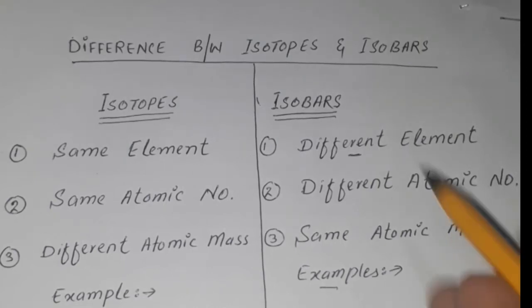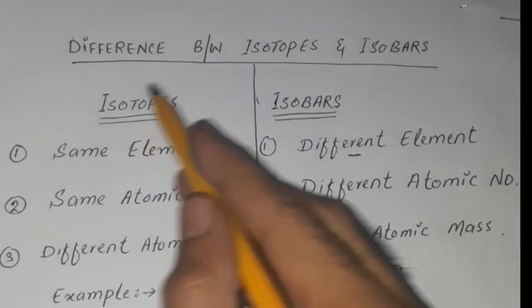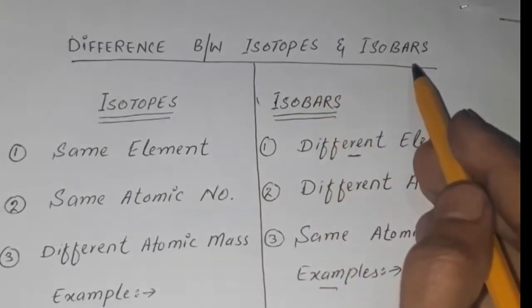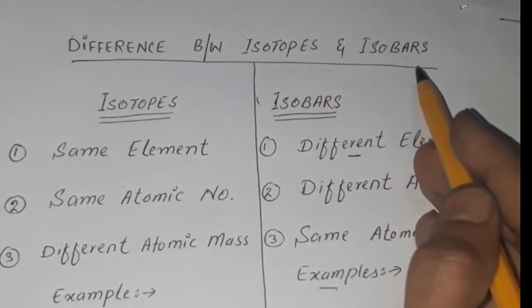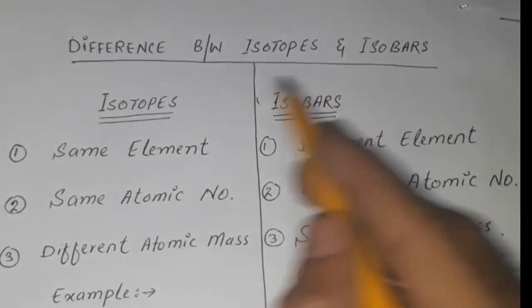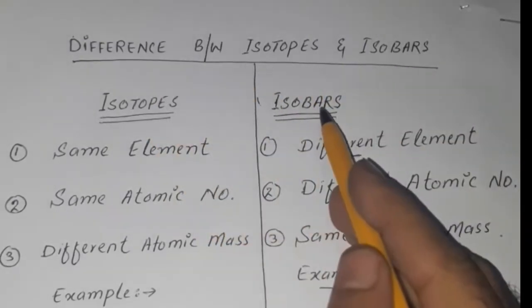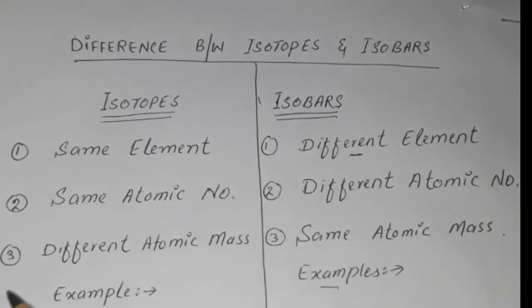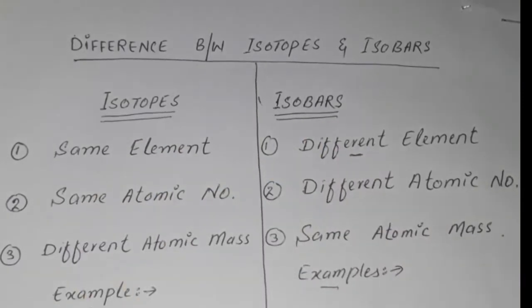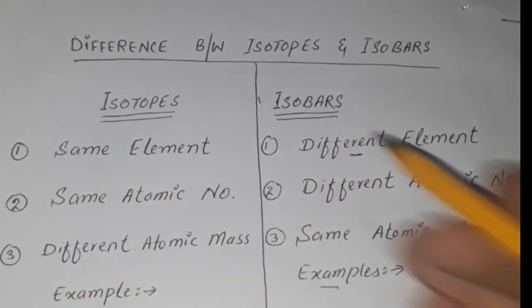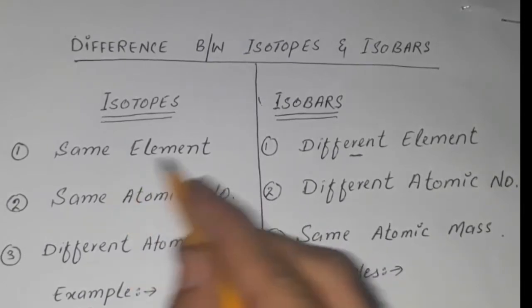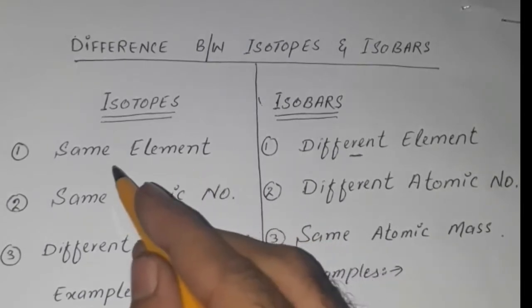Bismillahirrahmanirrahim. What is the difference between isotopes and isobars? Isotopes are the atoms of the same elements.